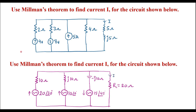In this video, let me consider two numericals on Millman's theorem. The first problem asks us to use Millman's theorem to find current I for the circuit shown, where I is flowing in a 5+J5 ohm resistor. The second problem also asks us to find current I using Millman's theorem, where I flows through load resistor RL.